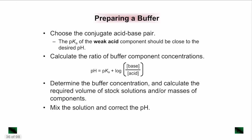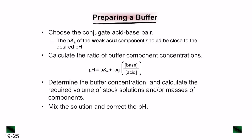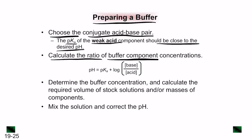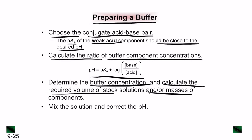To prepare a buffer: first, choose the conjugate acid-base pair, ensuring the pKa of the weak acid component is close to the desired pH. Then calculate the ratio of buffer component concentrations using the Henderson-Hasselbalch equation. From this, calculate the base-to-acid ratio and determine the required concentrations. Finally, determine the buffer concentration, calculate the required volumes of stock solutions, mix the solutions, and correct the pH.